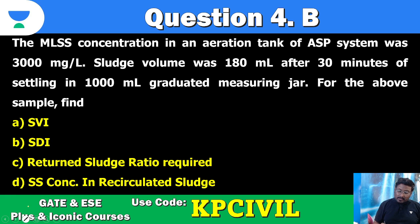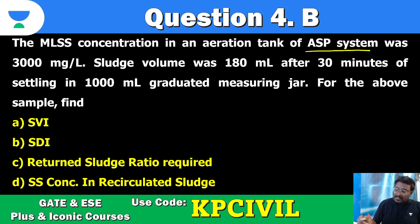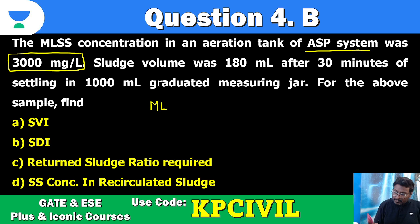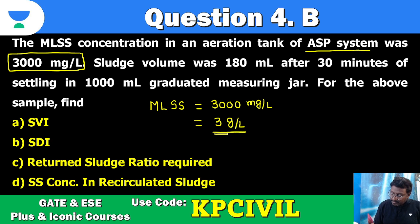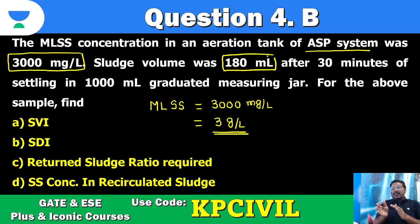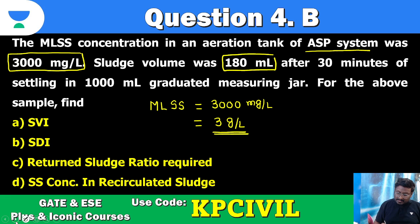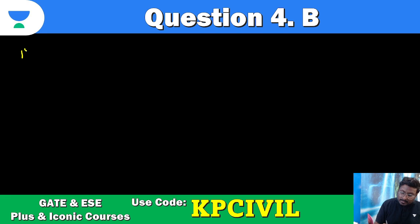The MLSS concentration in an aeration tank of activated sludge process system is 3000 milligram per litre. Sludge volume is 180 litre after 30 minutes of settling in a 1000 ml graduated measuring jar. We need to find: SVI, SDI, returned sludge ratio, and SS in recirculated sludge. This is my most regular question.